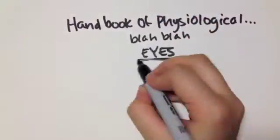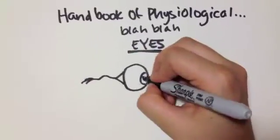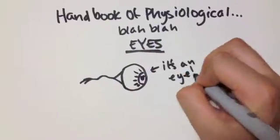In 1867, Helmholtz wrote the Handbook of Physiological Optics, which describes some theories on depth perception, color vision, and motion perception.